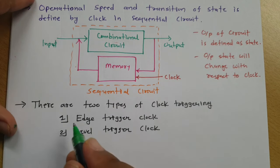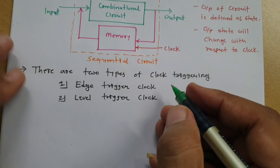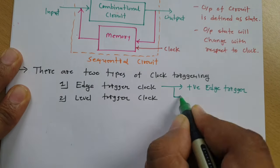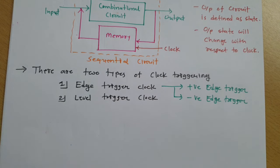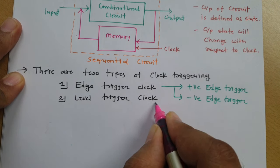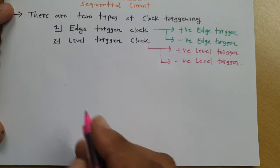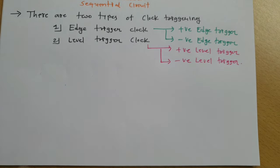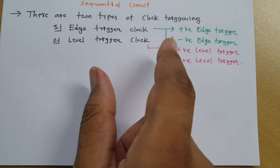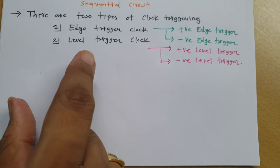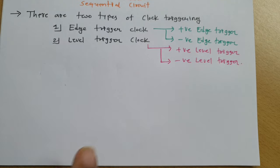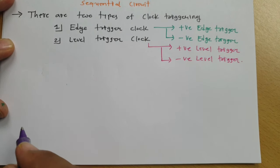In edge triggering, there are two categories: positive edge triggering and negative edge triggering. And in level triggering, there are again two categories: positive level trigger and negative level trigger. So basically there are two types of clock triggering — edge triggering and level triggering — each having two sub-categories.